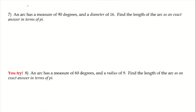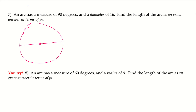An arc has a measure of 90 degrees and a diameter of 16. Find the length of the arc as an exact answer in terms of pi. If we don't have a picture, we need to draw one — even if it's not perfect. The diameter passes through the center at 16 units, and we have an arc measure of 90 degrees. We want to find the length of the arc.